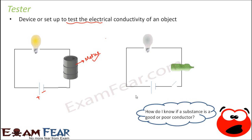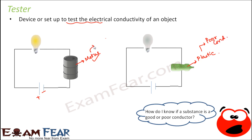Now, using the same circuit as a tester, instead of the metal we place a plastic object. When you switch it on, the circuit path is complete, but since the plastic object doesn't allow electricity to pass through it, the bulb does not glow. So the rule is: if the bulb glows, the object is a good conductor; if the bulb does not glow, the object is a poor conductor.